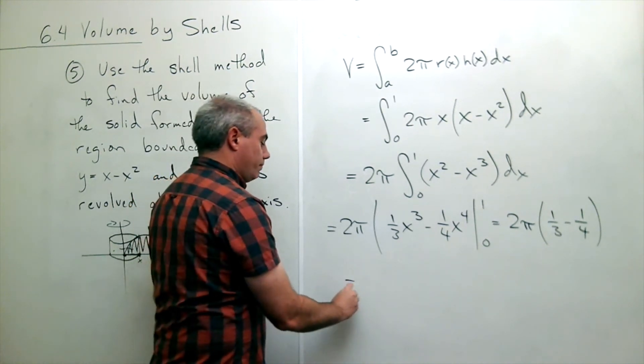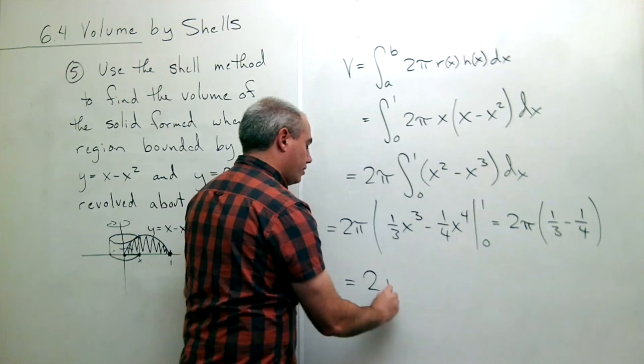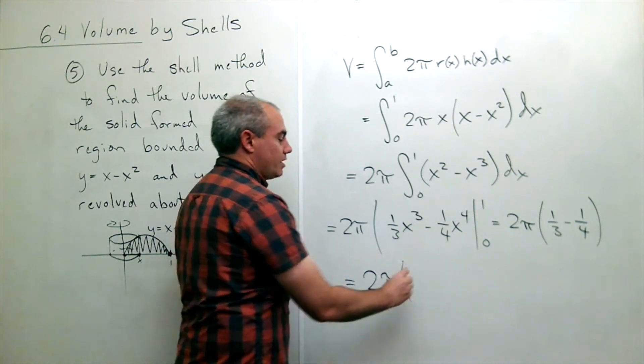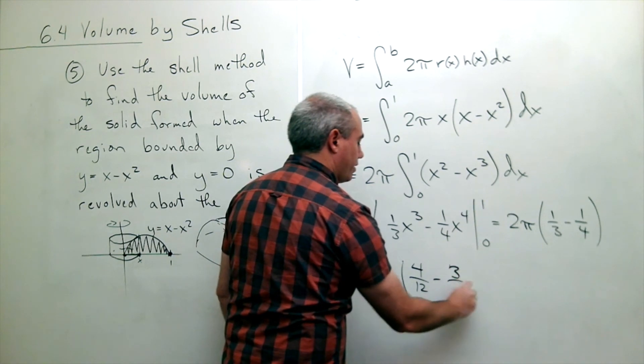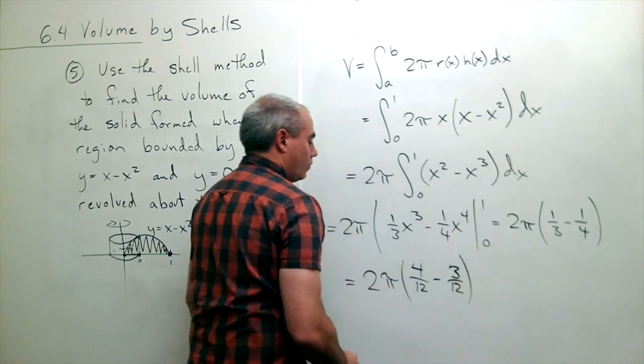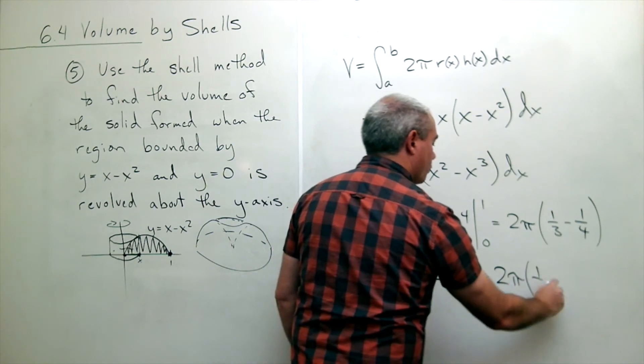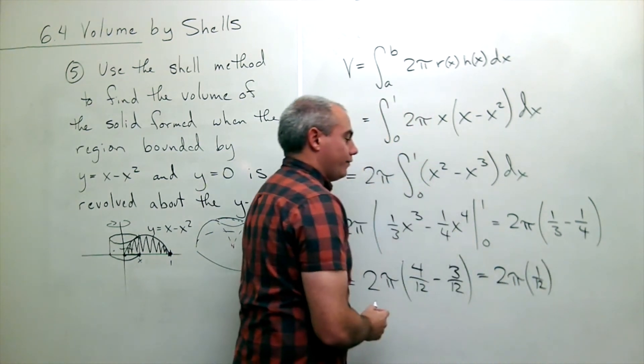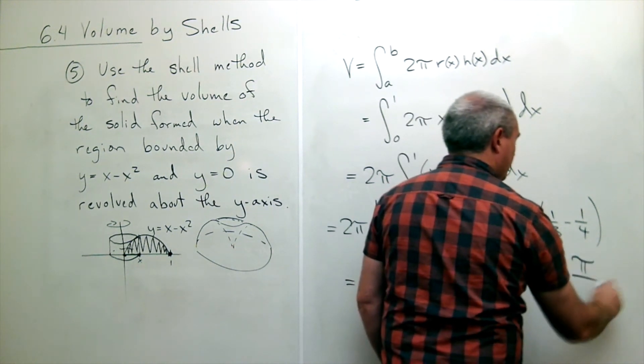Now we just need to simplify this a little bit. A third minus a fourth is the same as 4 12ths minus 3 12ths. Which means that's 1 12th or this is 2 pi times 1 12th or if you prefer this is pi divided by 6.